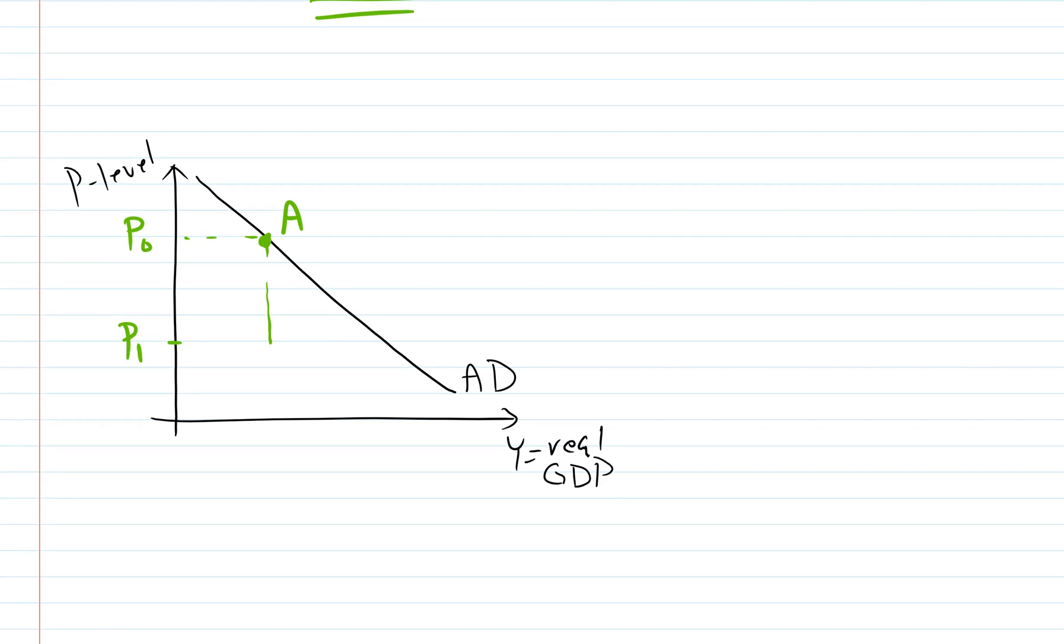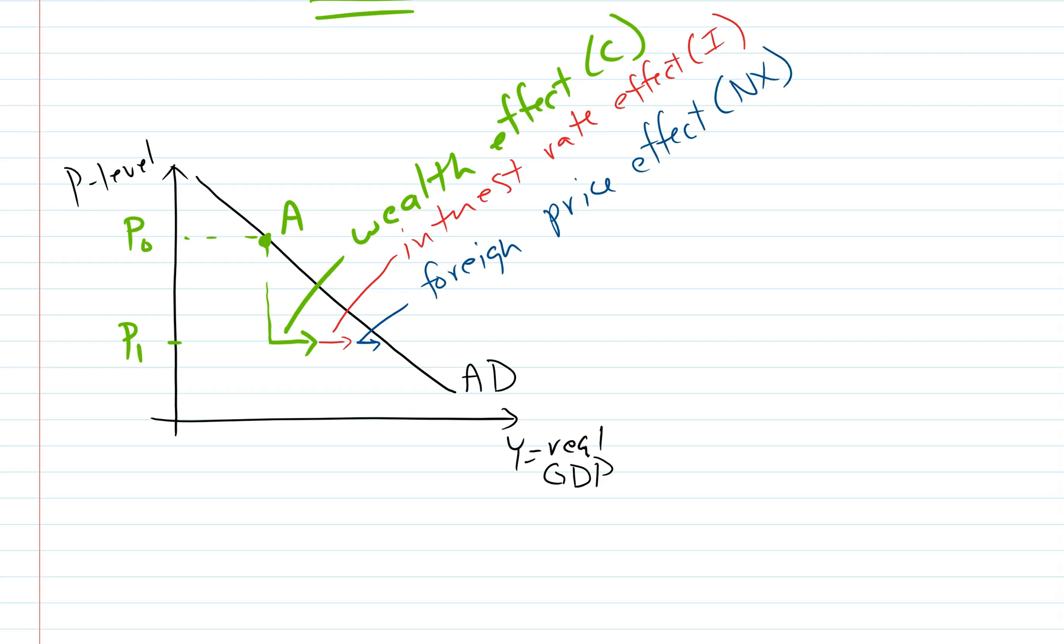Let's put these together. What happens if our price level falls? We're talking price level, not the price of a specific good but overall price level. We have these three effects: the wealth effect affecting consumption, the interest rate effect giving us more investment, and the foreign price effect affecting net exports. These effects may be relatively small, but as long as there's some effect, the aggregate demand will still have this downward sloping relationship where it increases when the price level falls and decreases when the price level rises.